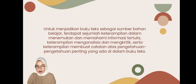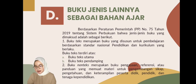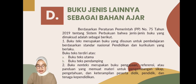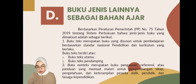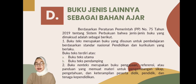Bagian D: buku jenis lainnya sebagai bahan ajar. Berdasarkan Peraturan Pemerintah Nomor 75 tahun 2019 tentang sistem perbukuan, jenis-jenis buku yang dimaksud adalah sebagai berikut. Ada dua jenis buku, yaitu buku teks dan buku non-teks. Buku teks merupakan buku yang disusun untuk pembelajaran berdasarkan standar nasional pendidikan dan kurikulum yang berlaku, terdiri atas buku teks utama dan buku teks pendamping.